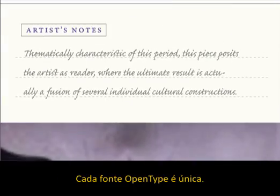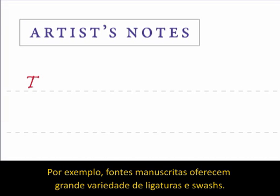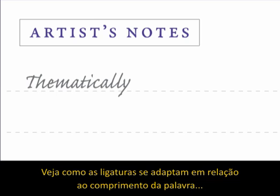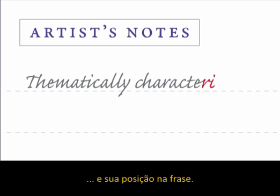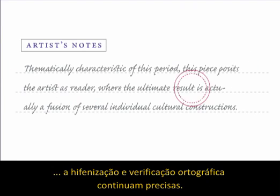OpenType preserves the glyph's stroke weight and composition. Every OpenType font is unique. For example, specialized script fonts offer extensive ligatures and swashes. Watch how the ligatures adapt relative to the word's length and position within the sentence. And because Creative Suite 3 applications are OpenType-savvy, spell-checking and hyphenation are still accurate.